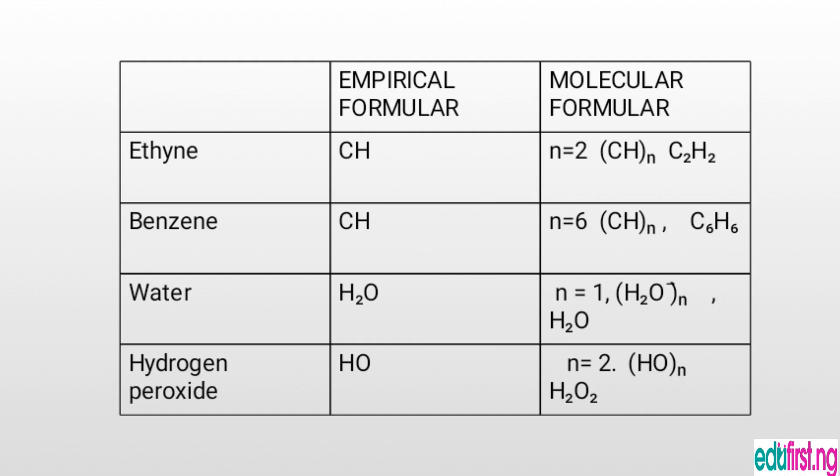Meanwhile, observe that the empirical formula didn't give us the exact number of moles. What it did was give us information about the component elements present in this compound — which is carbon and hydrogen — and the ratio in which these elements are combined. Also, we have compounds that have the same empirical formula but different molecular formula, like benzene.